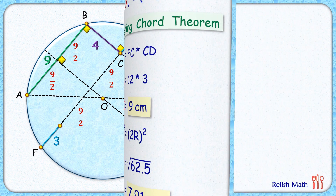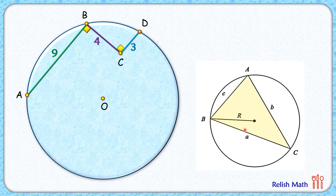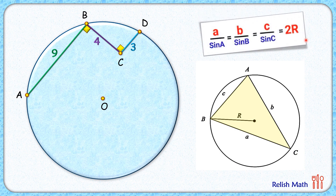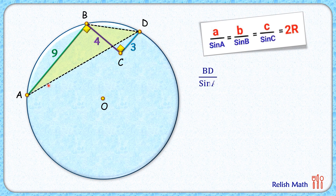For the second solution we will use the sine rule. It states that when a triangle is inscribed in a circle, the radius of the circumscribed circle can be found using the relation a / sin A = 2R. Let's join BD and AD, giving us triangle ABD inscribed in the circle. Taking angle A, we get BD / sin A = 2R. So to find R we need the values of BD and sin A.